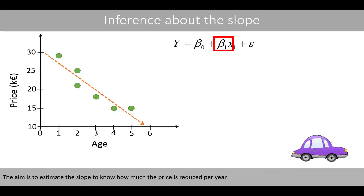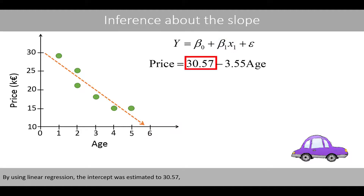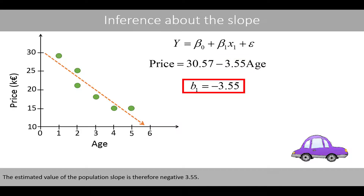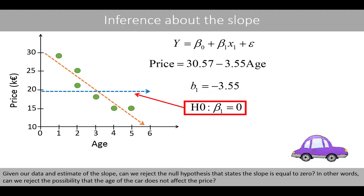The aim is to estimate the slope in order to know how much the price is reduced per year. By using linear regression, the intercept was estimated to 30.57 and the slope to negative 3.55, which means that the price is estimated to decline by 3,550 euros each year. The estimated value of the population slope is therefore negative 3.55. Given our data and estimate of the slope, can we reject the null hypothesis that states that the slope is equal to zero?